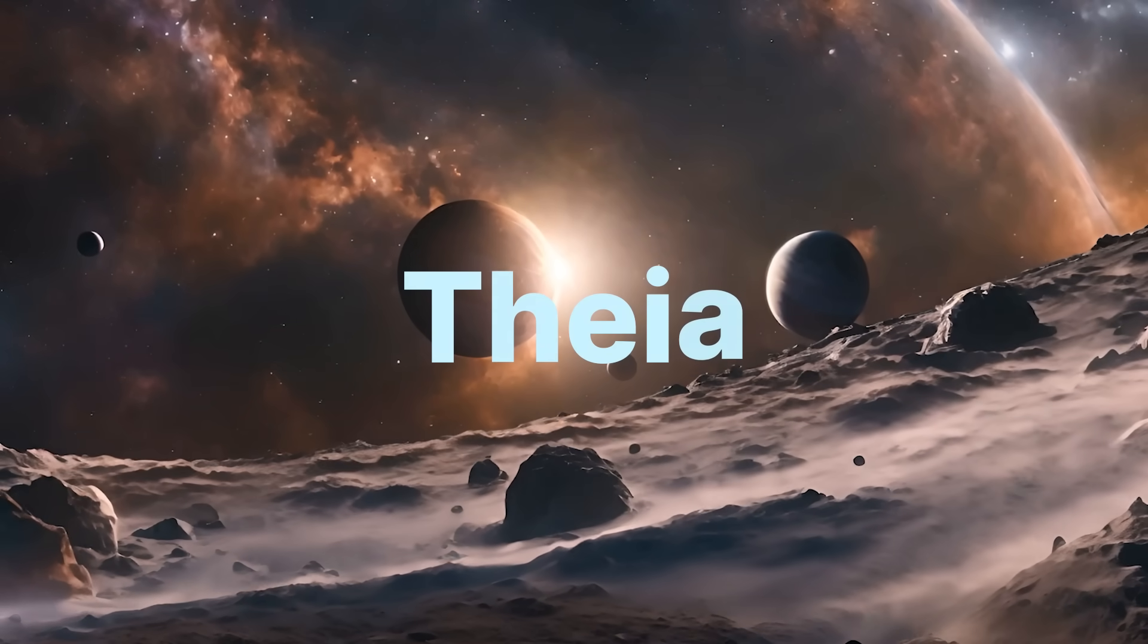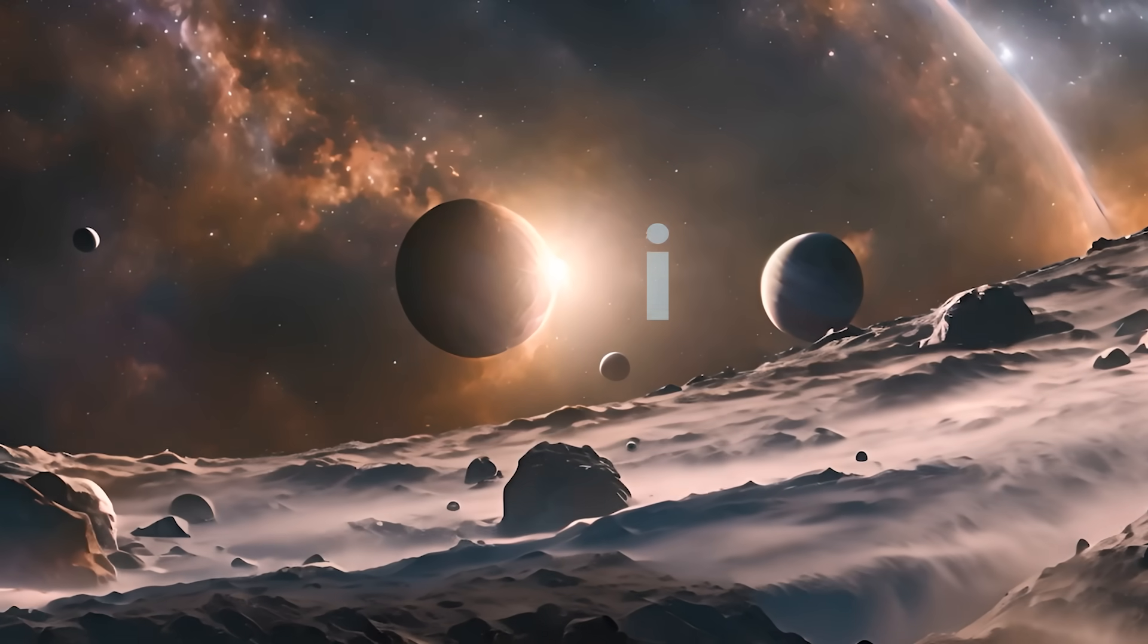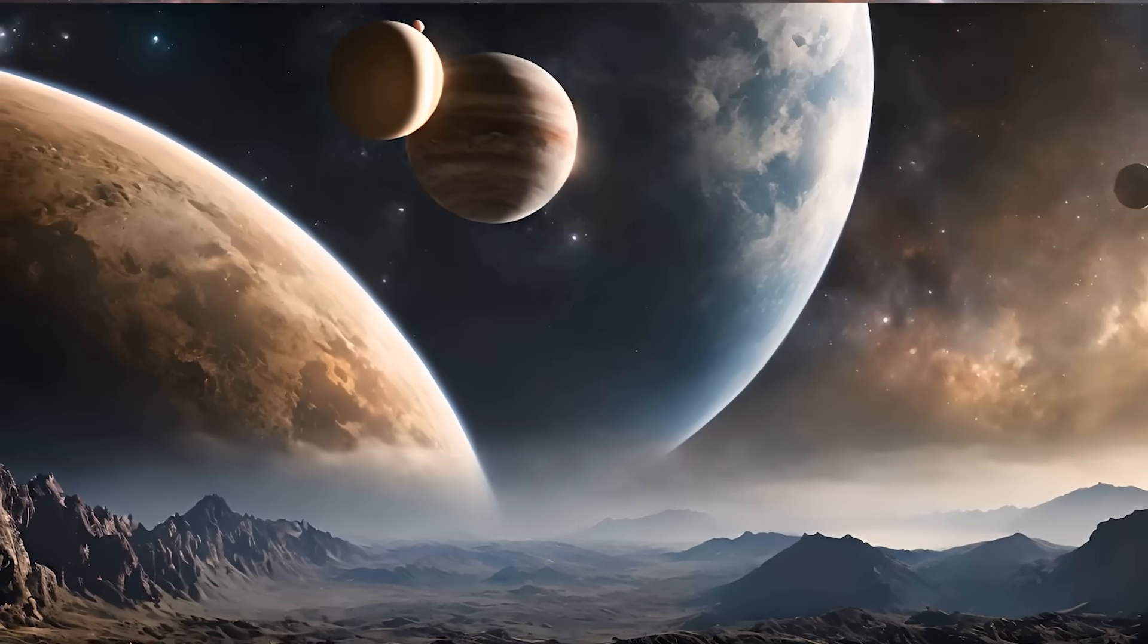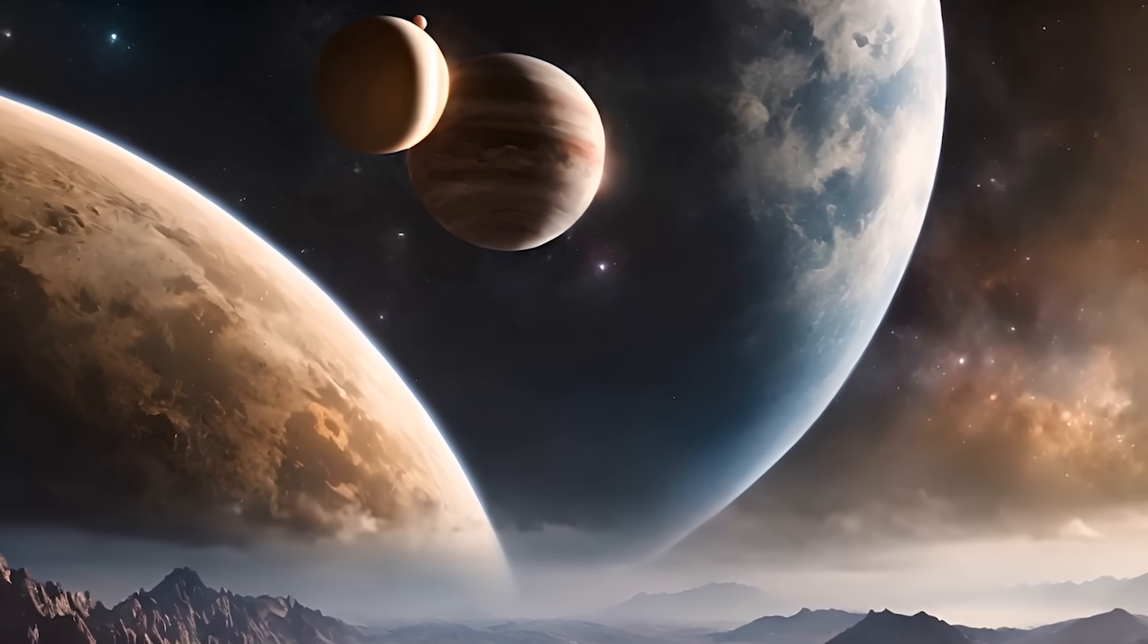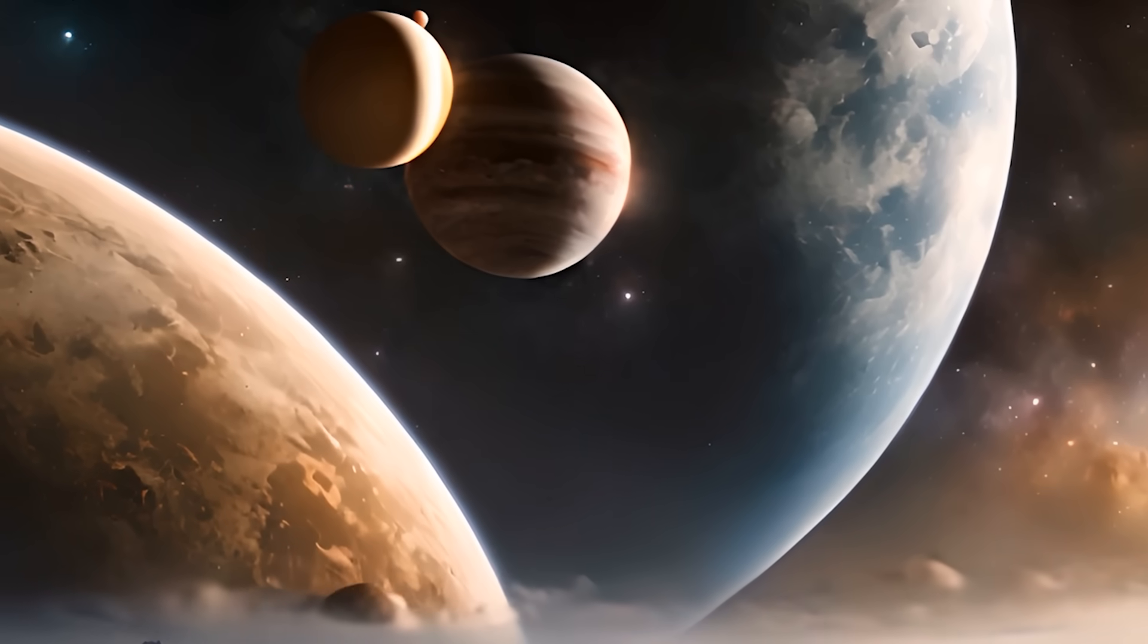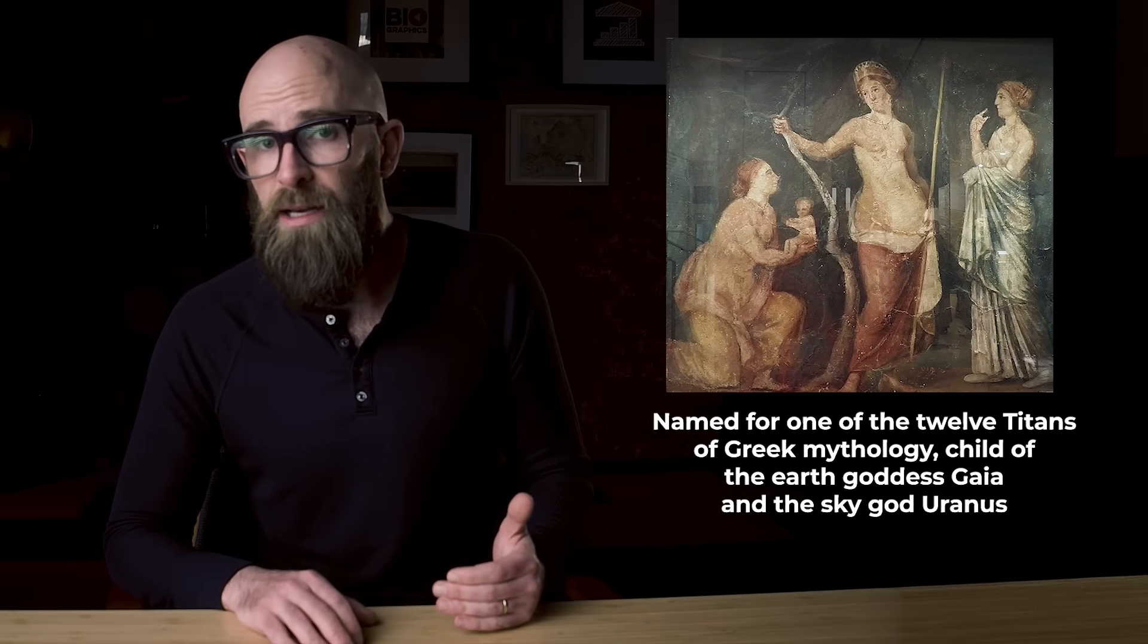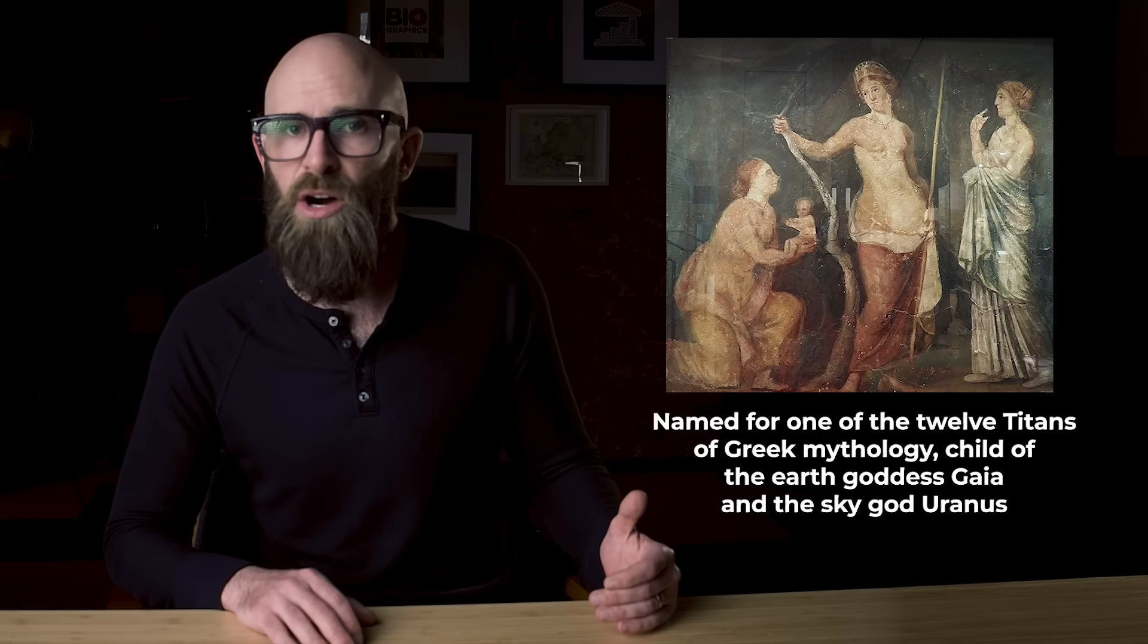If it ever existed at all, the planet we have since named Theia might have looked like anything. After all, this is a celestial body that would have been consumed by our planet many billions of years before the first human ever thought to question whether it ever might have existed. Named for one of the 12 titans of Greek mythology, child of the Earth goddess Gaia and the sky god Uranus, Theia wouldn't have had much in common with her mythological namesake.